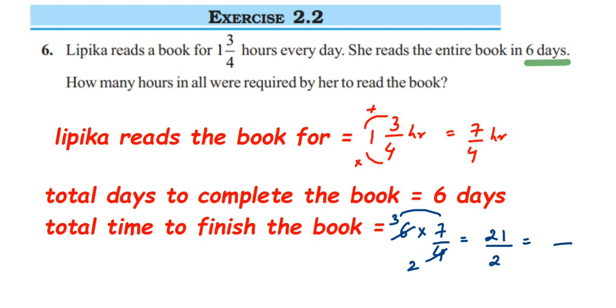Now 21/2 is an improper fraction. We can write it in mixed form. 2 × 10 = 20, and we need one more to get 21, so 1 will be the numerator. This equals 10 1/2 hours, which is the total time to finish the book.